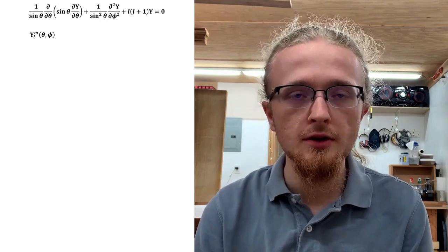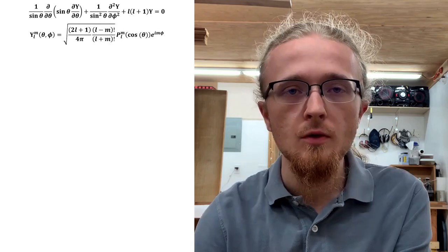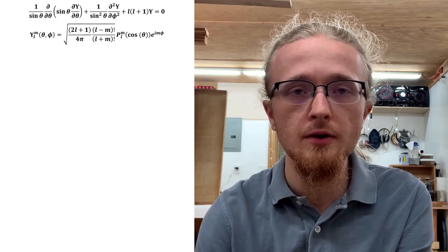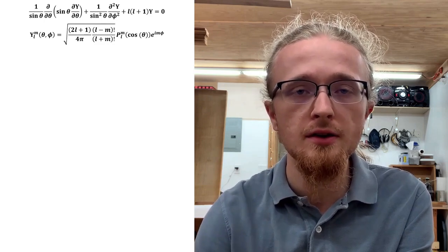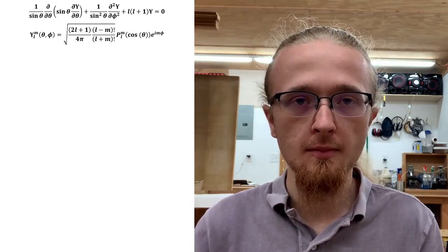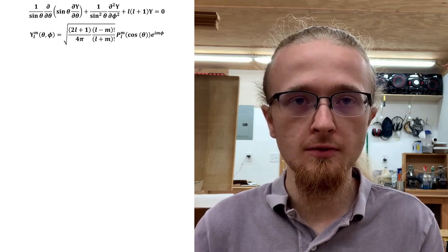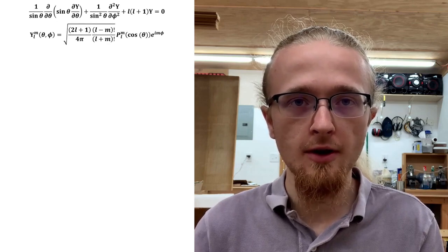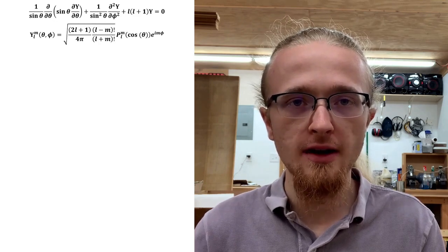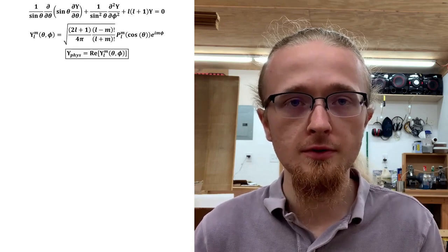This is the first case where we need those extra physicality constraints mentioned at the end of the setup. Using the normalization convention common in acoustics, the spherical harmonics are given by this formula, where L is an integer and M is also an integer, specifically one that's greater than or equal to negative L and less than or equal to positive L. The spherical harmonics are complex, given the azimuthal phase. To get the physical pressure functions, you can take either the real part or the imaginary part, depending on your phase conventions, because sine and cosine differ only by a 90-degree phase difference. For this video, I arbitrarily chose the real part.